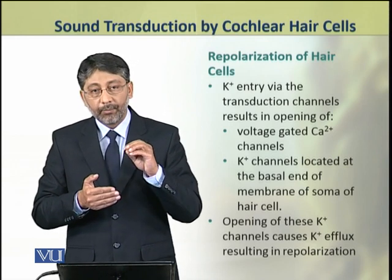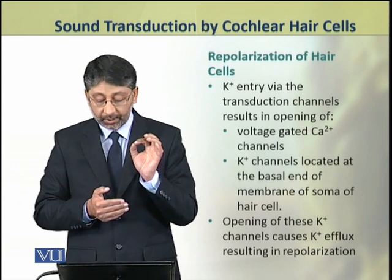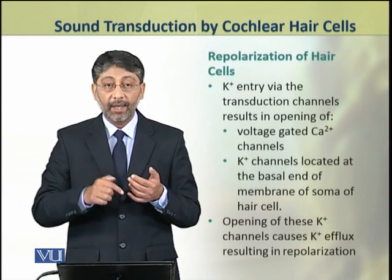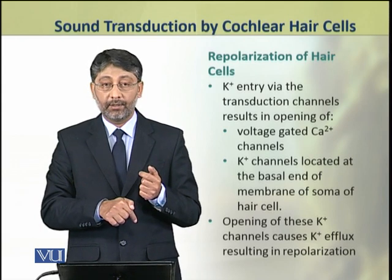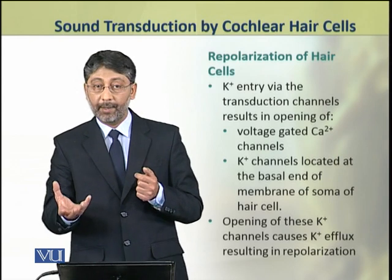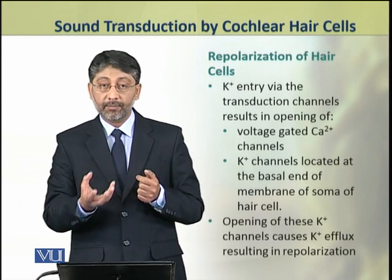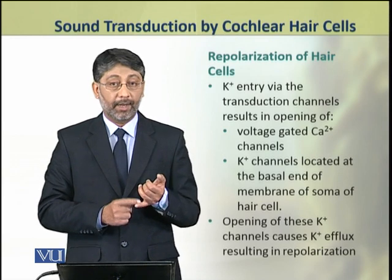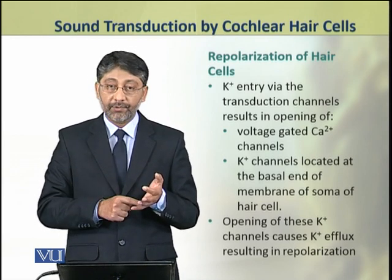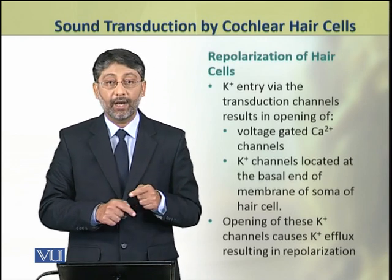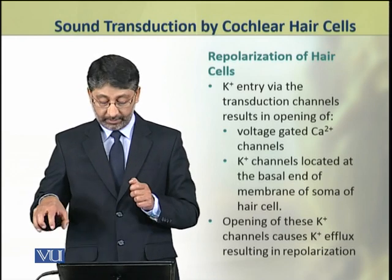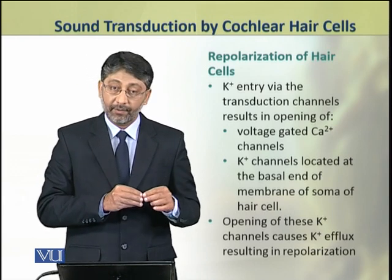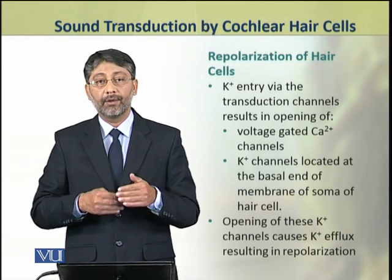When potassium ions enter through the transduction ion channels, this also results in the opening of two types of channels at the basal end of the hair cell. The voltage-gated calcium channels open at the basal end, and the potassium channels located at the basal end also open. As a result, there is an outflux of potassium ions and calcium ions from the basal end, and the cell becomes repolarized.